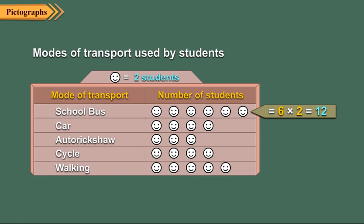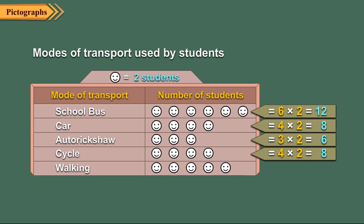Similarly, number of students using cars is equal to four into two, which is equal to eight. Number of students using auto rickshaw is equal to three into two, which is equal to six. Number of students using cycle is equal to four into two, which is equal to eight.